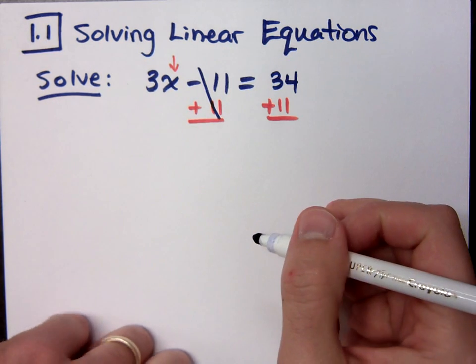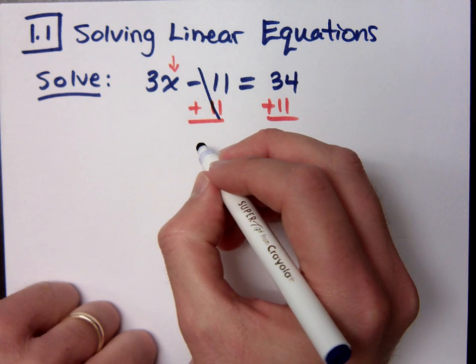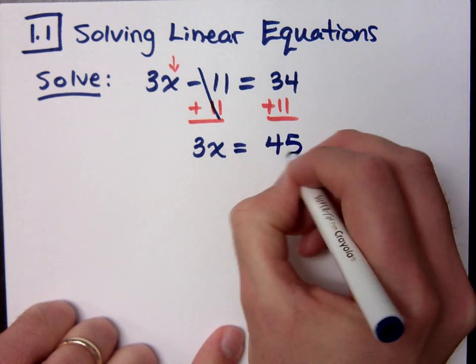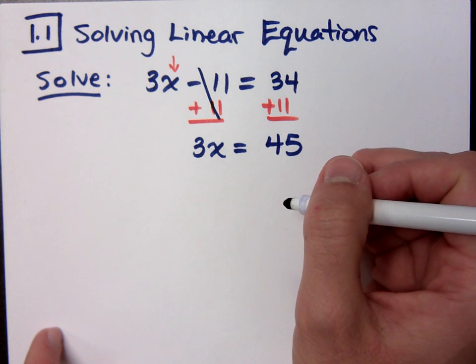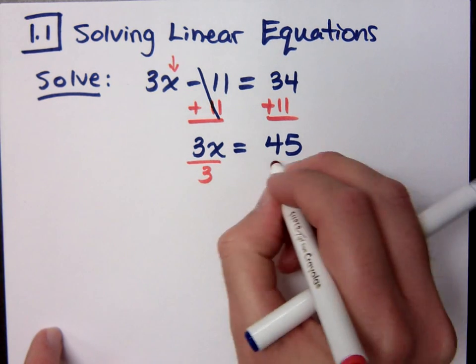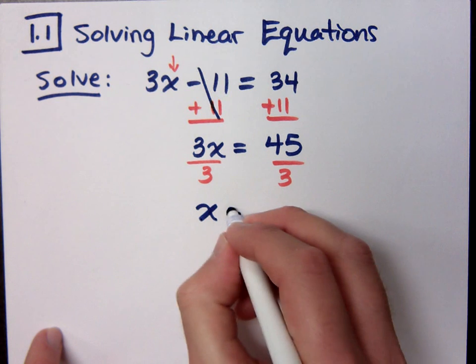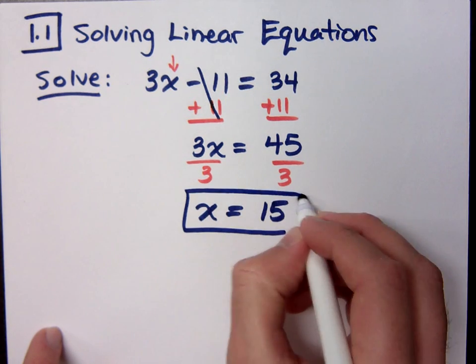So these guys cancel because it gives you a 0. A negative 11 plus 11 is 0. These are additive inverses. So what am I left with in my equation? 3x equals 45. Now I don't want 3, I want just 1. Divide both sides by 3 using the multiplication property of equality, and I find out that x equals 15. Do y'all agree? And I know what you guys want to do here. Let's just put a nice, pretty little box around this.